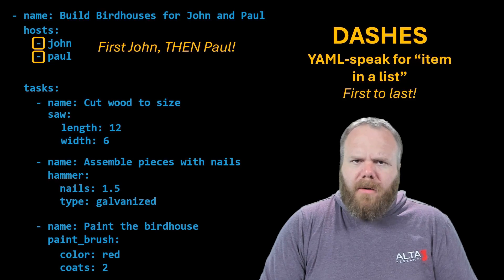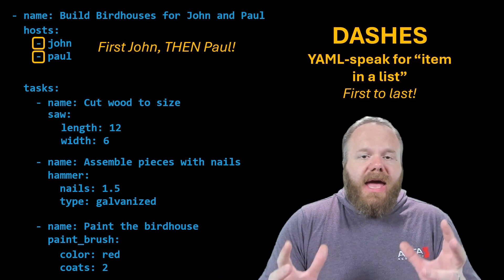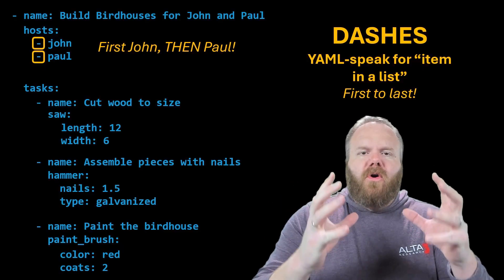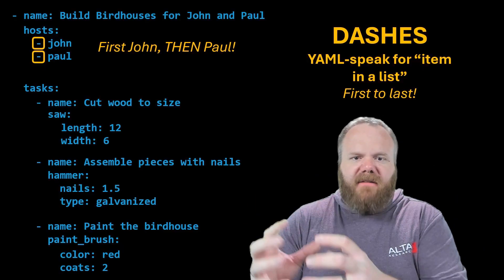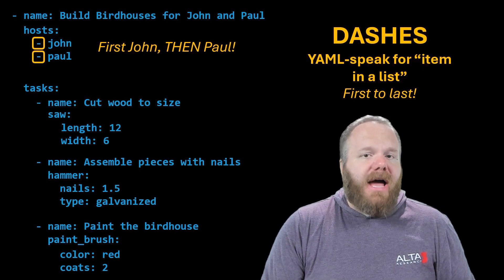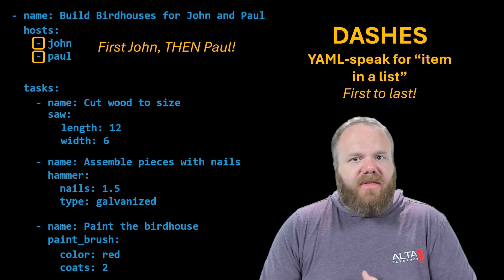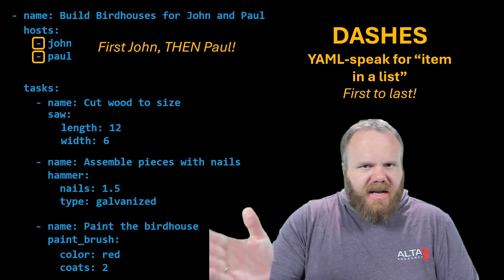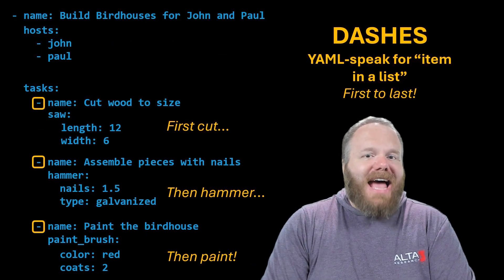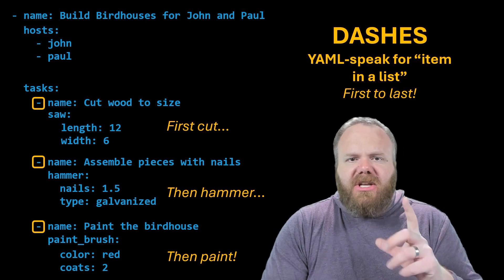Here I've only got two: John and Paul. If I had like a hundred hosts, Ansible would not work on all a hundred machines at once — it would work on five, then five, then five. But the point is, who are the first folks to get their birdhouse built? First John, then Paul, then third, fourth, fifth, then sixth, seventh, eighth, ninth, and tenth. So the order matters, and like we already said, the order of these tasks matters. Notice that there's a dash in front of each block: first task is saw the wood, second task hammer the nails, third task paint the birdhouse.